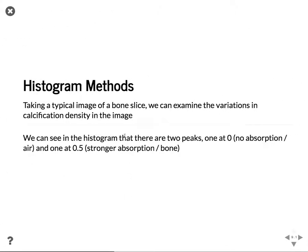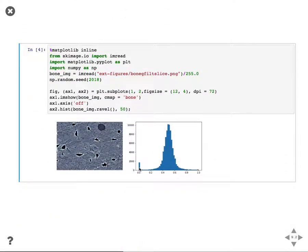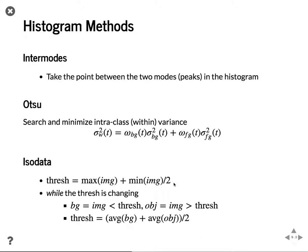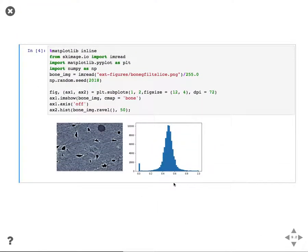For the histogram methods, if we take that typical bone slice image, we see variations in calcification density and two peaks that show up — one at 0 and one at 0.5. We have the image and the histogram, and there's a value at 0 and a very broad peak at 0.5. Trying to pick a threshold here isn't particularly easy, but given the fact that there are two peaks, it's probably somewhere between them to differentiate well between those two groups.